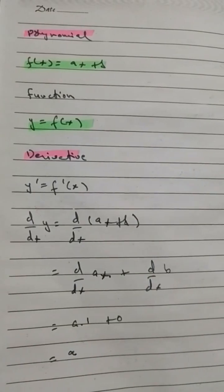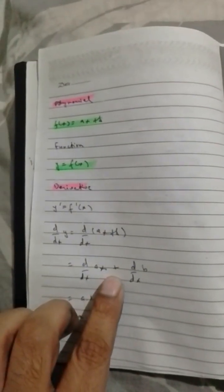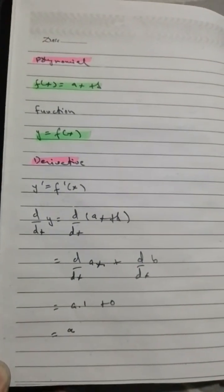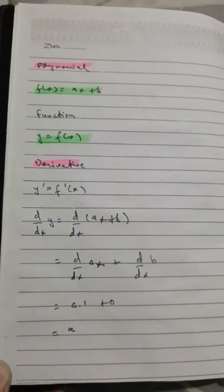In this case, we split them up. We find d/dx of both separately: d/dx of ax plus d/dx of b. d/dx of b is 0.